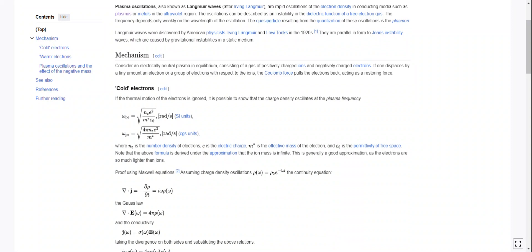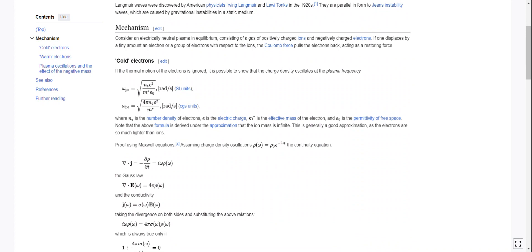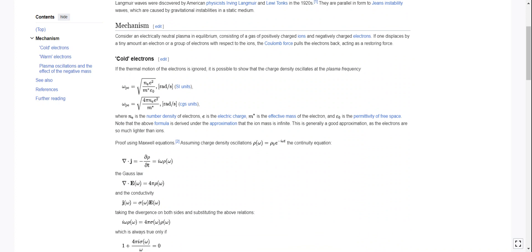Mechanism. Consider an electrically neutral plasma in equilibrium consisting of a gas of positively charged ions and negatively charged electrons. If one displaces an electron or a group of electrons with respect to the ions, the Coulomb force pulls the electrons back, acting as a restoring force. So in the case here, cold electrons.